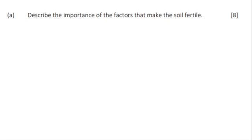Under soil pH, the pH level determines the availability of nutrients to plants. The pH levels of 6 to 7 are optimal, and most plants prefer a slightly acidic pH.